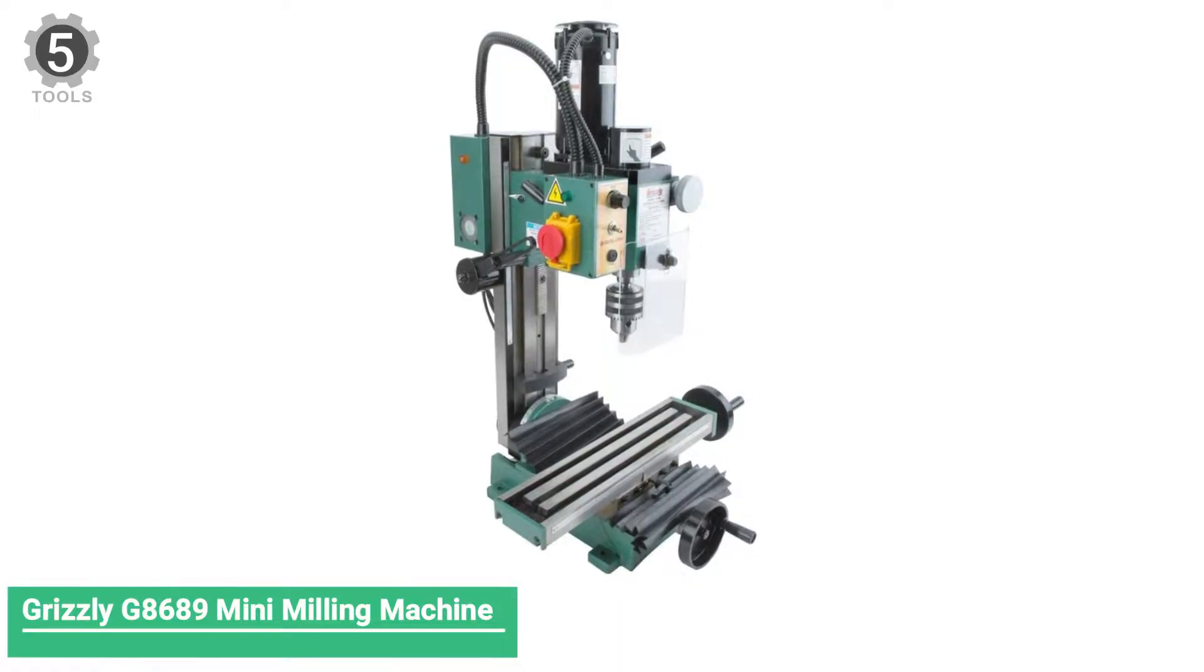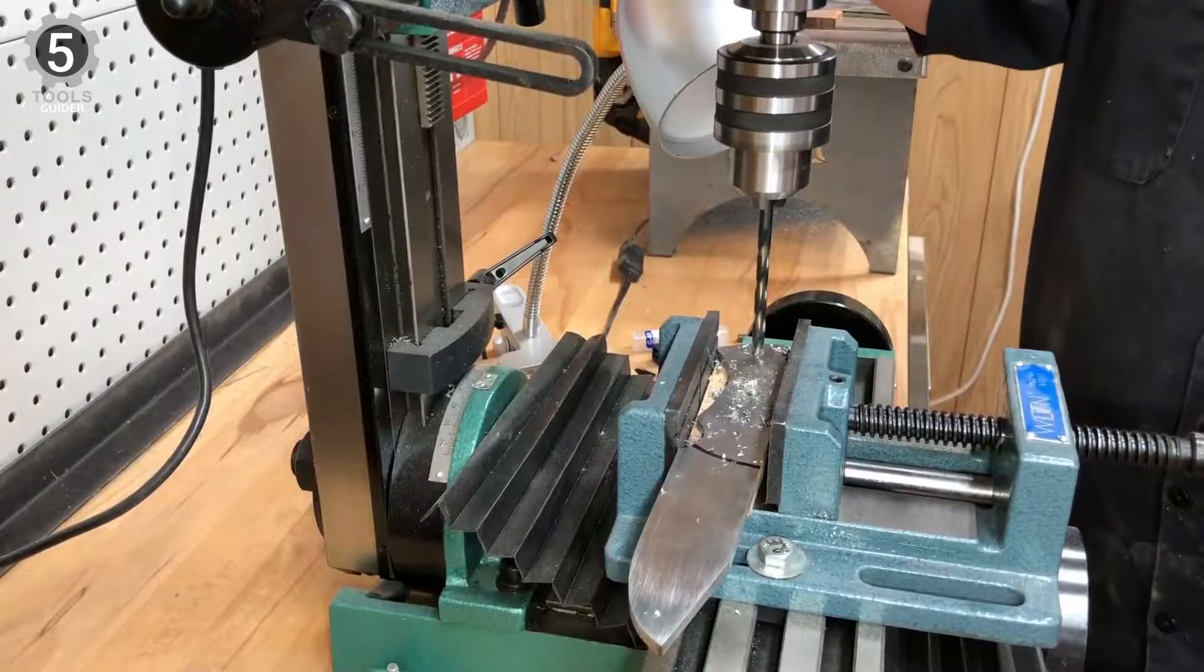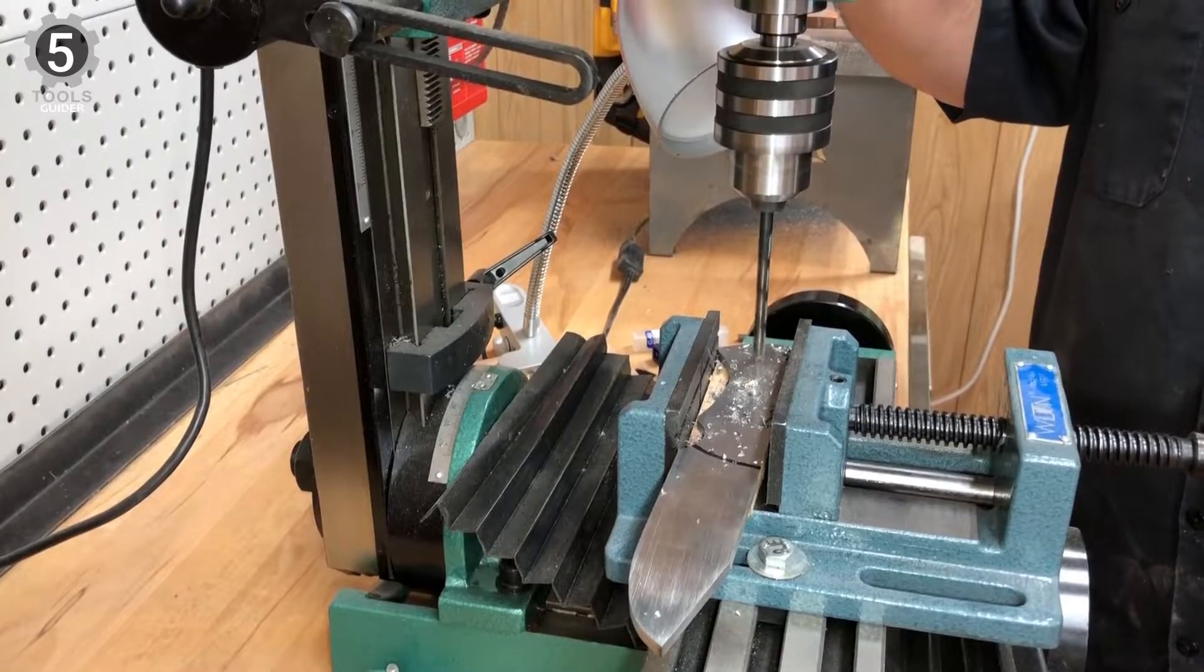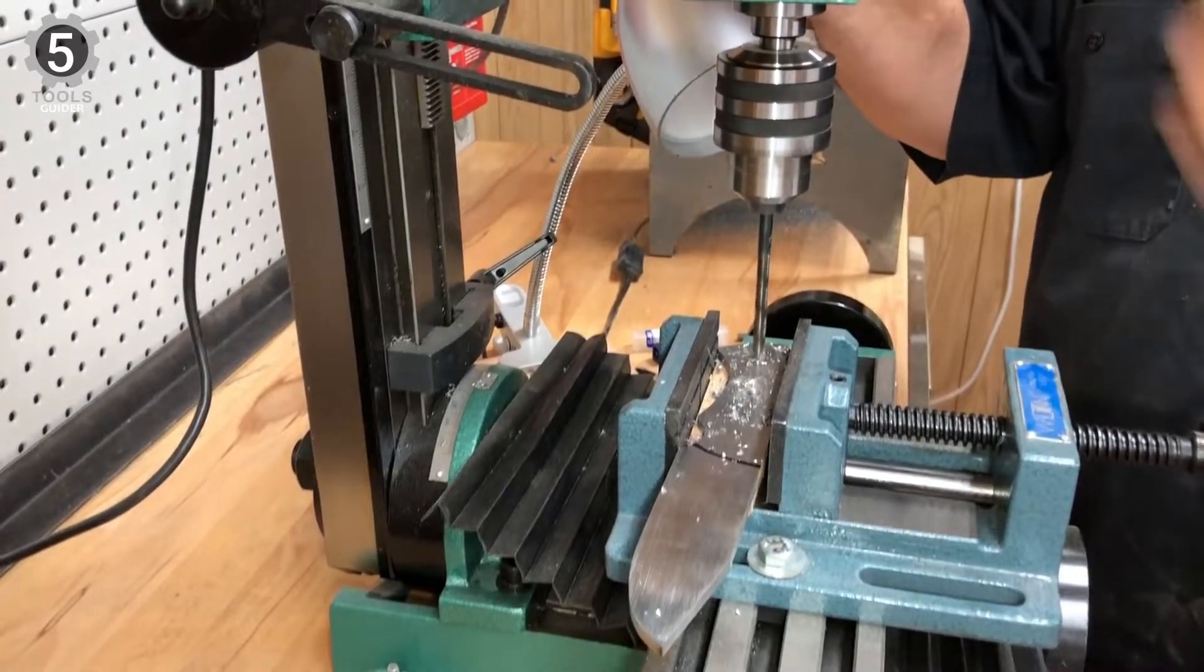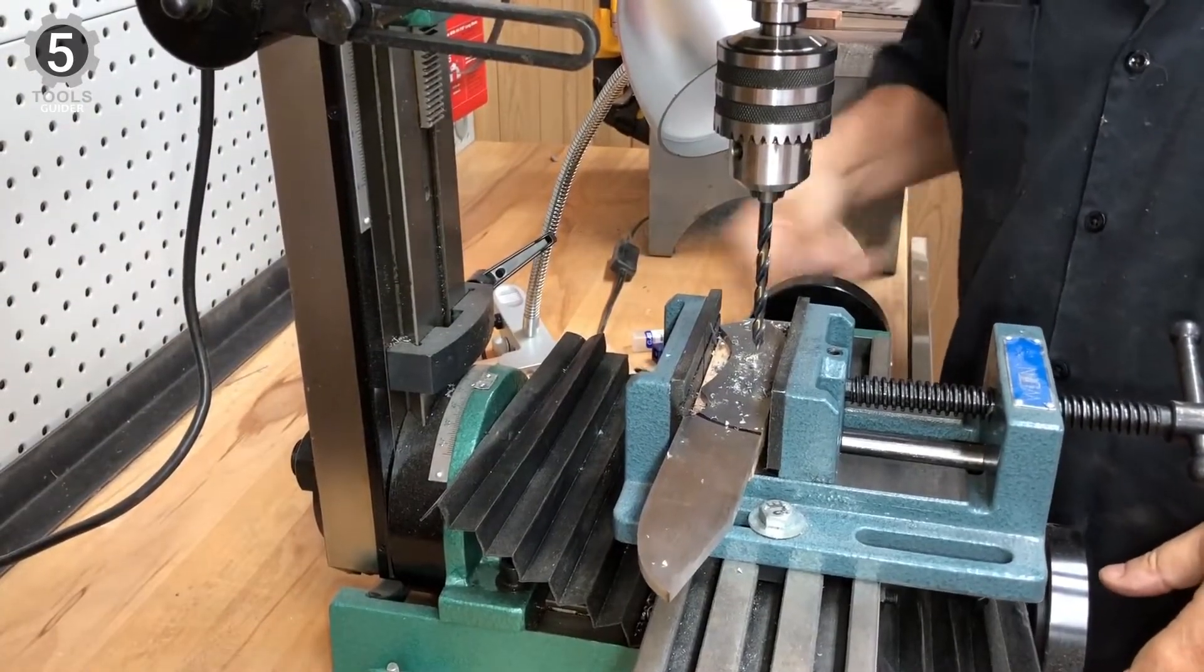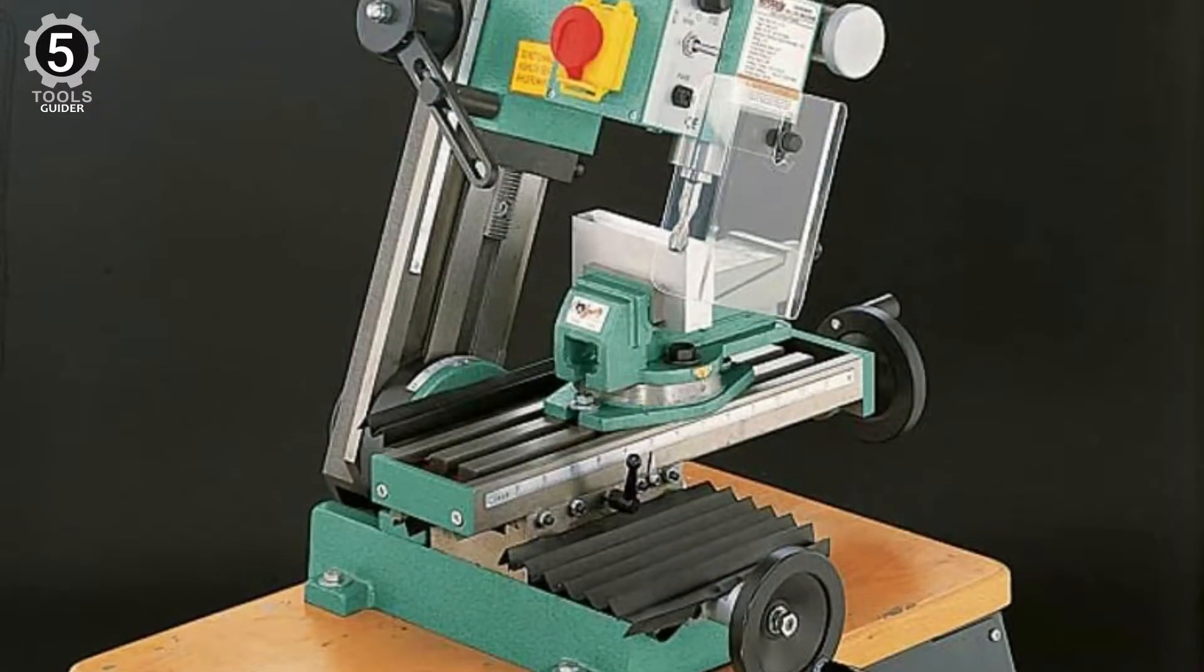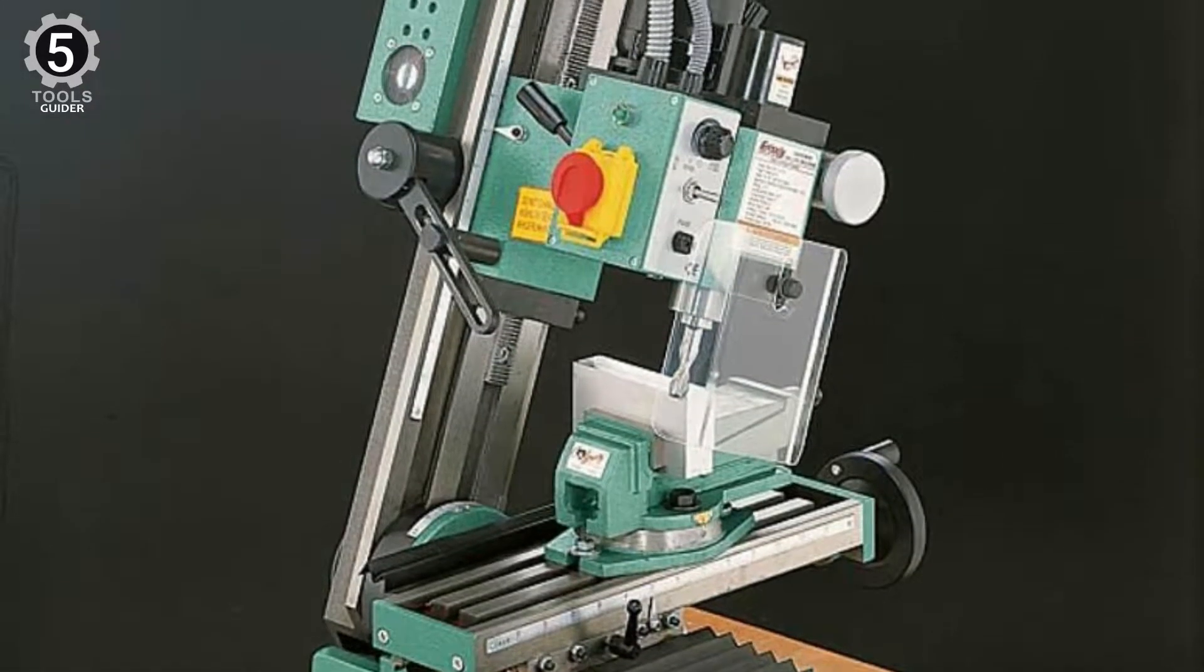Grizzly G8689 Mini Milling Machine. The Grizzly G8689, this mini mill has a 110V motor that can handle speeds from 100 to 2500 RPM. It also has a gearbox for two preset speed ranges.